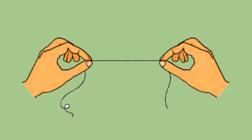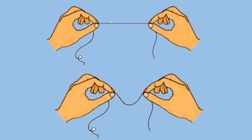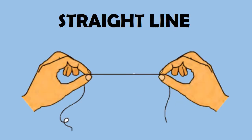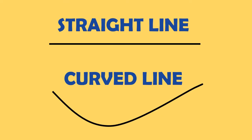In the first picture, the person has held the thread tightly. You see, in both these pictures, a line has been formed with the help of this thread. In the first picture, the thread has formed a straight line, and in the second picture, the thread has formed a curved line.